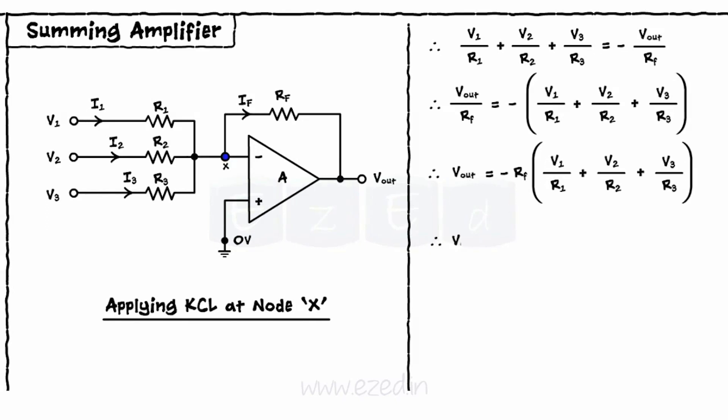we get Vout equals minus Rf upon R1 into V1 plus Rf upon R2 into V2 plus Rf upon R3 into V3.